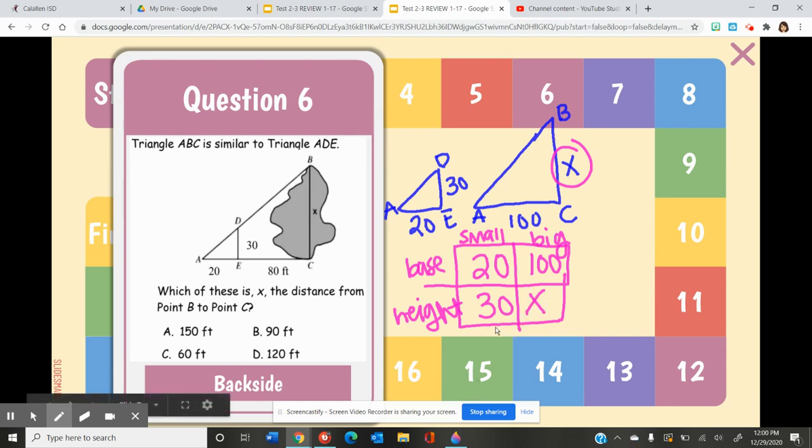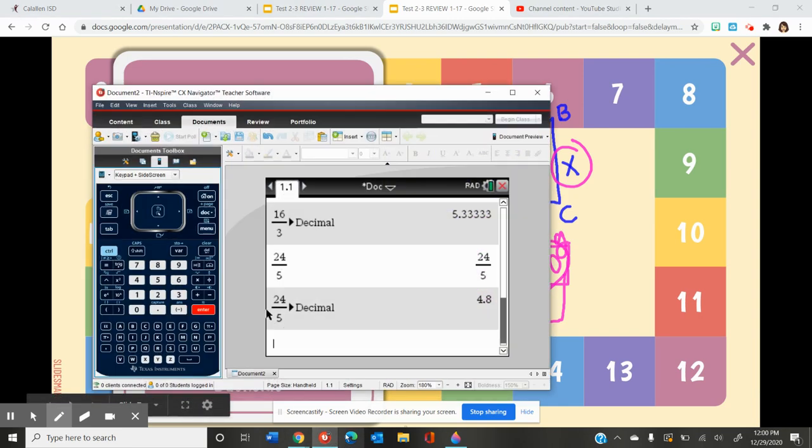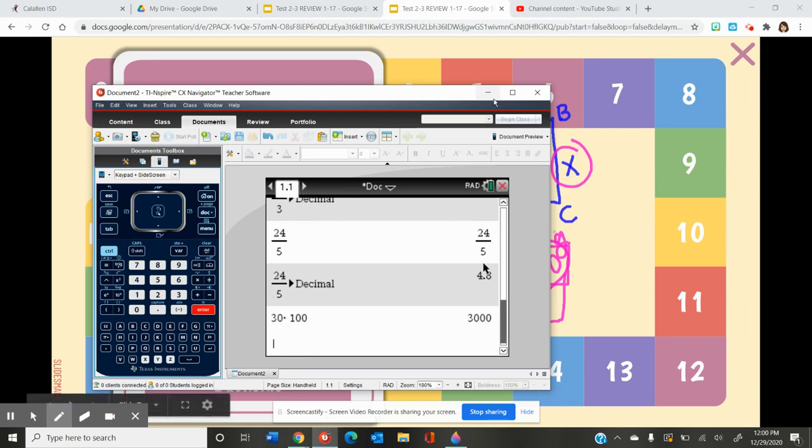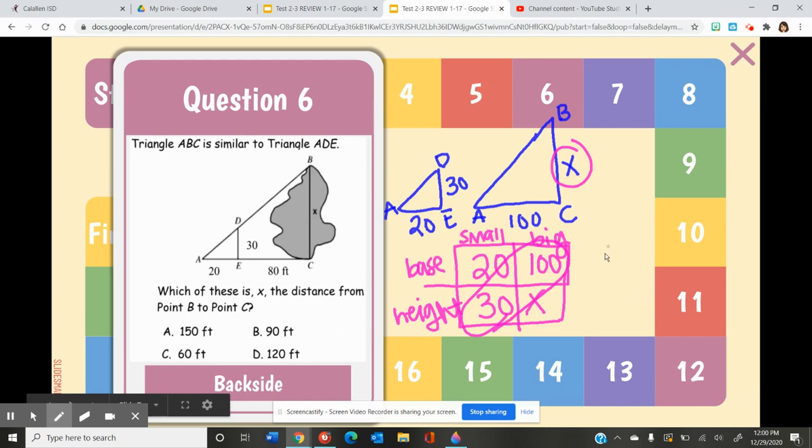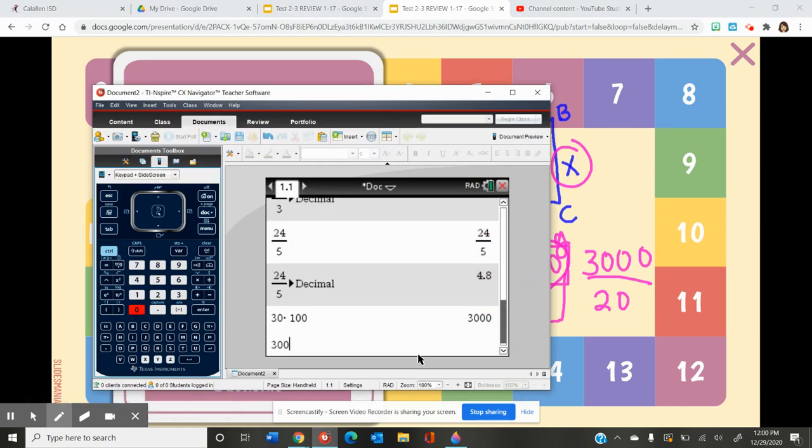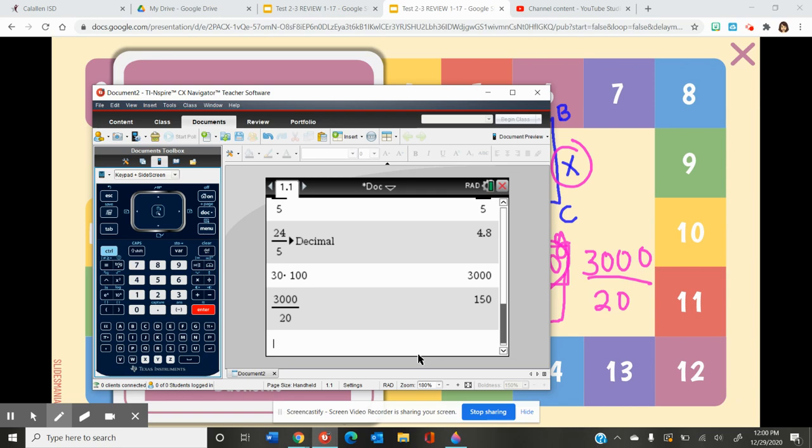So now all I have to do is cross multiply and divide. So 30 times 100, if you don't know that off the top of your head, remember you can always use your calculator. So 30 times 100 is 3,000. So here we have 3,000, and we want to divide that by 20. So 3,000 divided by 20 will give us our answer. So 3,000 divided by 20, we get 150.